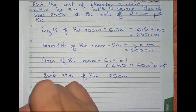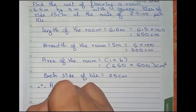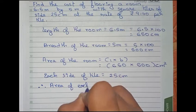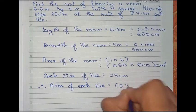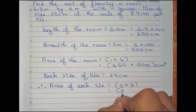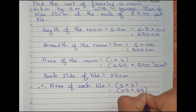Therefore, find area of each tile. The area formula is side into side, which would be 25 into 25 centimeter square.